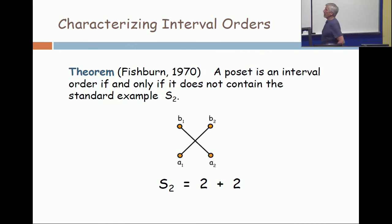And there is a famous theorem by Peter Fishburn, who was at Bell Labs when this was done, that characterizes interval orders in terms of forbidden sub-posets. So Fishburn's theorem is that a poset is an interval order if and only if it does not contain as a sub-poset what's called the standard example.